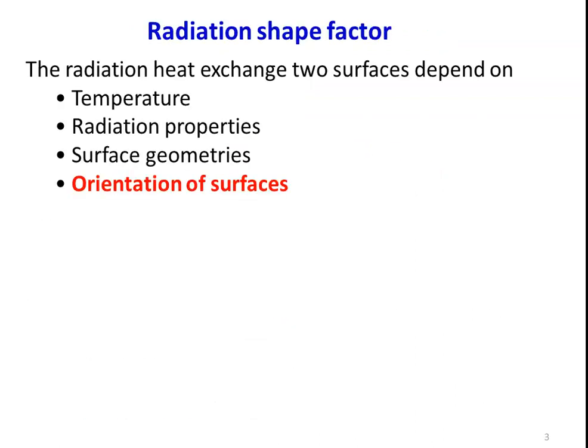In radiation shape factor, the radiation heat exchange between two surfaces depends on temperature, radiation properties, and the surface geometry and orientation of the surface. Temperature here means the absolute temperature of the surface. Radiation properties — as we discussed earlier — include emissivity, absorptivity, and reflectivity. For the majority of engineering surfaces, transmissivity is equal to zero. Surface geometry refers to the shape of the object, its geometrical properties, and area. To calculate the area, we have to define the surface geometry and the orientation of the surface.